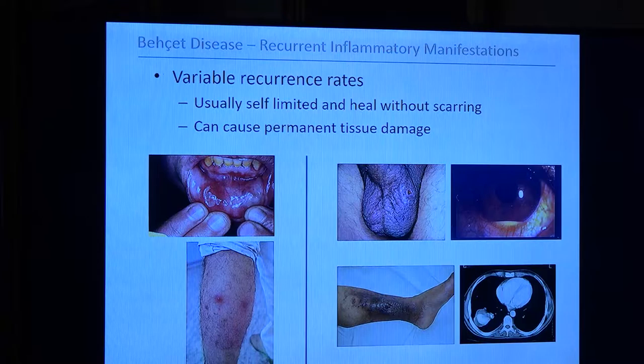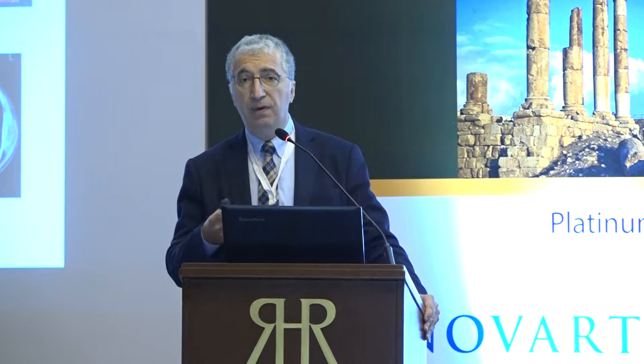Most of these manifestations are recurrent, and they are healing by themselves — so they are self-limited — without any scar, such as oral and genital ulcers. But some of them may leave a scar, such as uveitis, vascular manifestations, or neurologic manifestations. But they all are recurrent, and they all are self-limited.